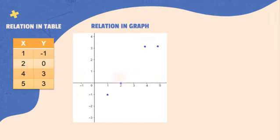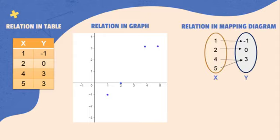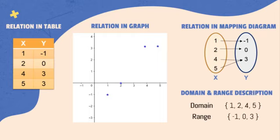Relation in graph: This image shows the ordered pairs plotted onto the Cartesian plane. Relation in mapping diagram: The figure shows the values in the domain pointing towards its correspondent value in the range. Domain and range description just shows the sets of domain and range separately.